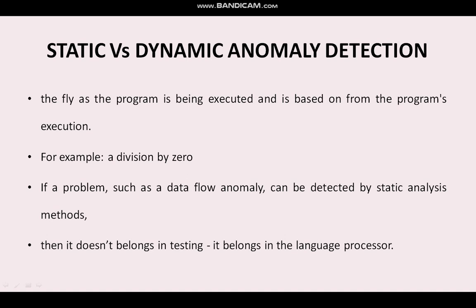A division by zero is one example of dynamic anomaly detection. If a problem such as a data flow anomaly can be detected by using static analysis methods, then it does not belong to testing — it is a language processor. We have to clearly differentiate what errors come under static anomaly detection and what problems come under the language processor. The very good example of dynamic anomaly detection is division by zero.